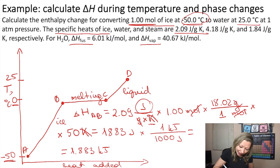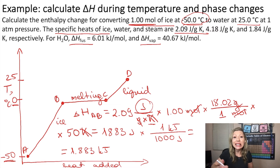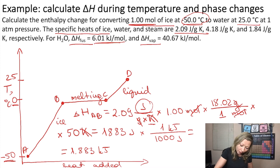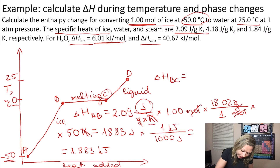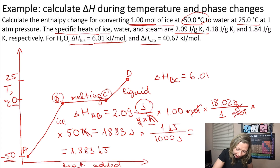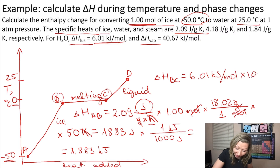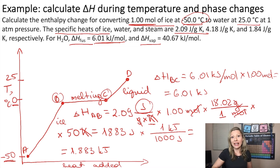Now let's calculate the enthalpy change associated with the melting process. For this I use the enthalpy of fusion, not the same formula as before. The enthalpy of fusion is 6.01 kilojoules per mole. So delta H_BC equals 6.01 kJ/mol × 1 mole = 6.01 kilojoules.